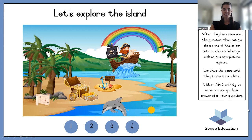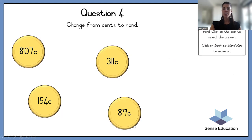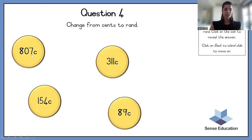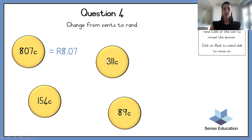Now we're going to change from cents to rand. And this time, because we took the comma to the right, we're now going to take the comma to the left. There's no comma here, so the comma would have been at the end. We're going to go two hops to the left — one, two — and the comma will then sit in here. So it is 8 rand and 7 cents.